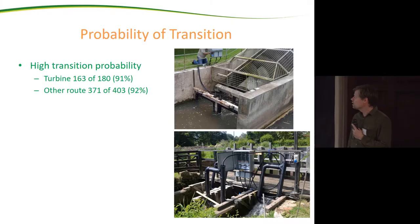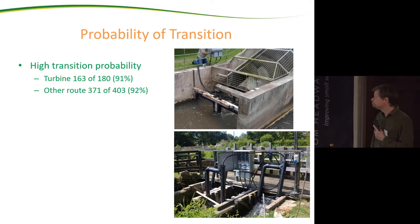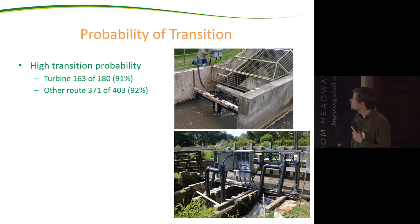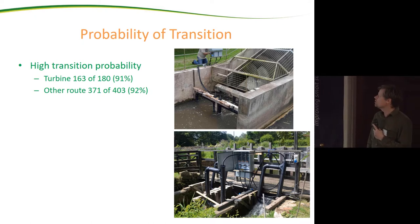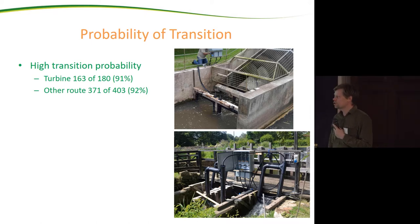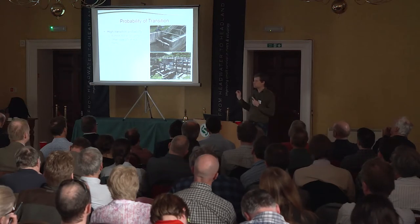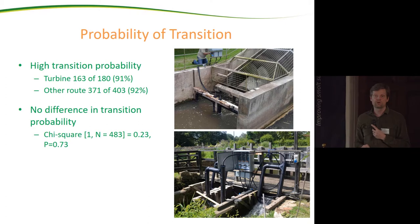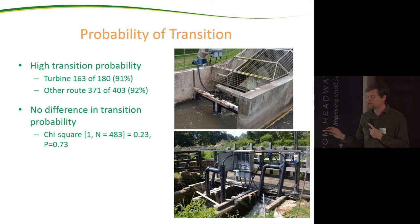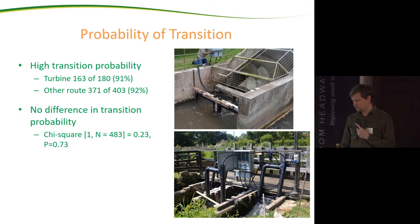Significant numbers went through the 'washing machine.' If we look at the probability of transition to East Stoke, 91% of individuals detected at the turbine were re-detected at East Stoke, and 92% of those using other routes were re-detected there. These are not actual survival measures since no telemetry system is 100% efficient, but they indicate a very high probability of survival with no detectable effect of going through the turbine on this medium-term basis.